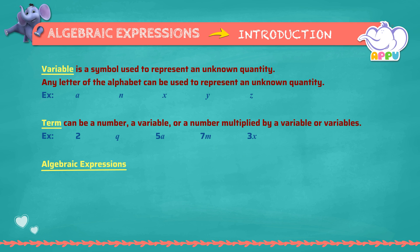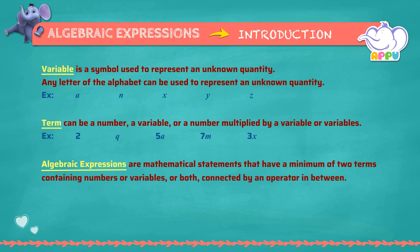Algebraic expressions are mathematical statements that have a minimum of two terms containing numbers or variables, or both, connected by an operator in between. The mathematical operators can be addition, subtraction, multiplication, or division. For example: m plus 5, a minus 2, 5p, x by 4.